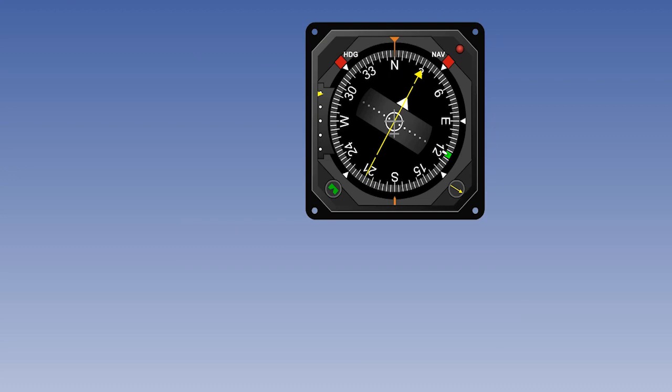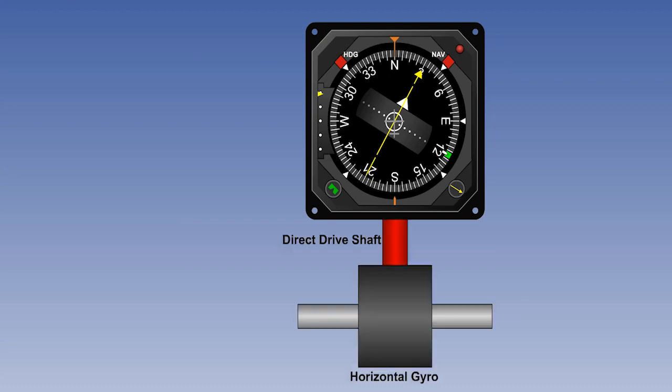What is required is a system which combines the best of both. The short-term rigidity of the gyro overcomes turning and acceleration errors. This needs to be combined with the longer-term monitoring of the Earth's magnetic field, so that if the gyro starts to drift, a servo system slaves it back to alignment with a magnetic input. Such a system is called a gyromagnetic compass.